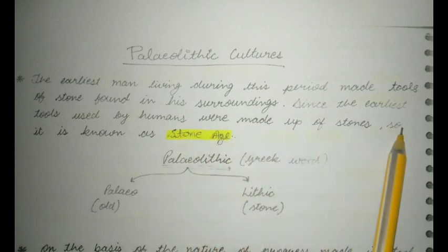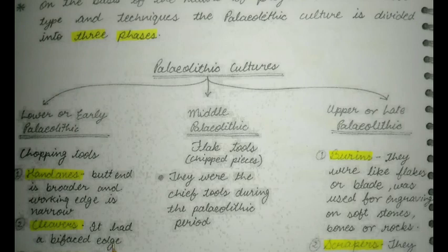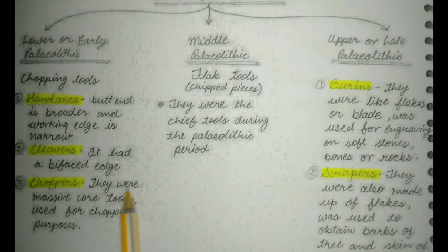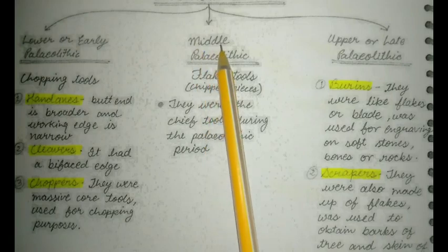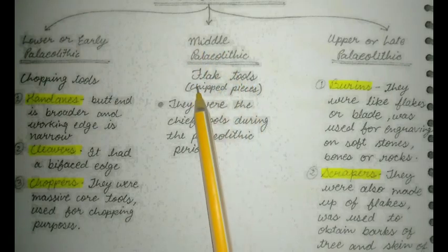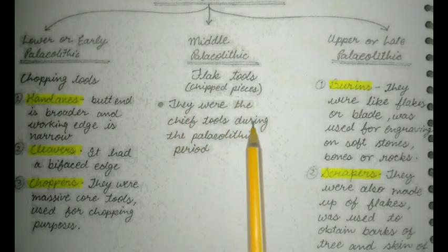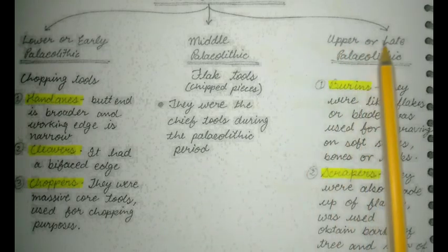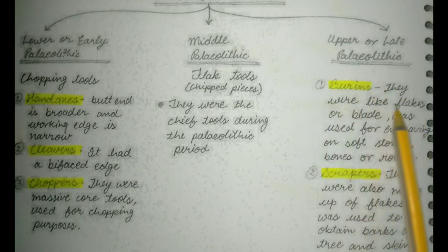...the period is known as such. Second is calibers, which had a biface edge. Last is choppers - they were massive core tools used for chopping purposes. Middle Paleolithic tools include plate tools and chipped pieces. They were the cheap tools during the Paleolithic period.